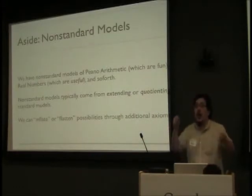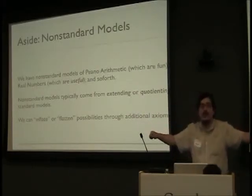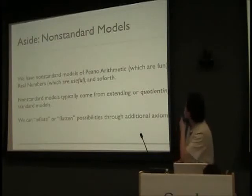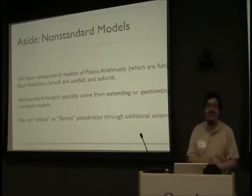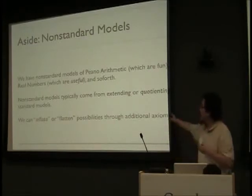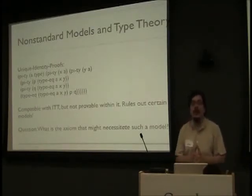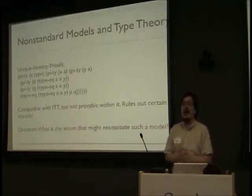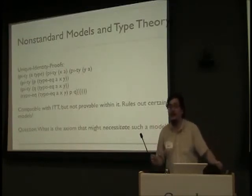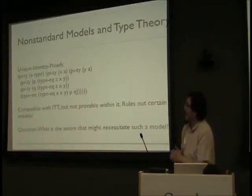It's the same story: you thought you had one model, but it turns out if you have this other axiom, you induce all these other elements you didn't know existed — they were just hiding. Then you get another axiom and rule out those elements. They come from extending or apportioning standard models, so-called intended models. But there's really no such thing as a standard model — it's just the one that we think we're working with. It's a psychological one. So we can inflate or flatten the possibilities with these axioms.